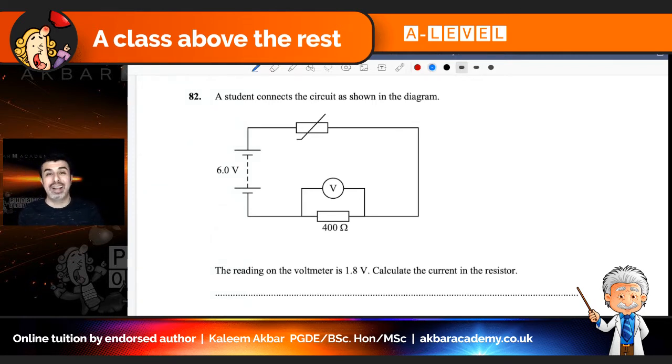So what we're supposed to realize here is that in a series circuit, current is always the same. And what they've done is they've actually given us the voltage across the fixed resistor. So we can actually find, and we've got the resistance in the fixed resistor, so we can find the current at that point and know that it's the same throughout.